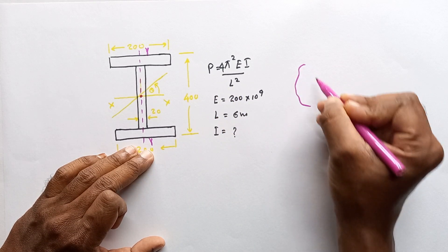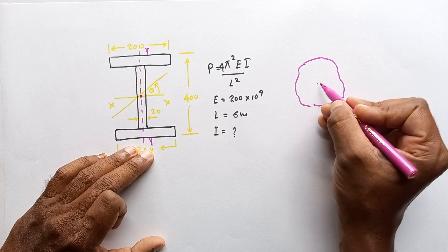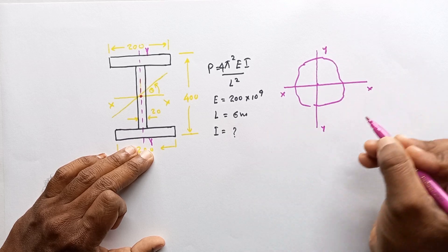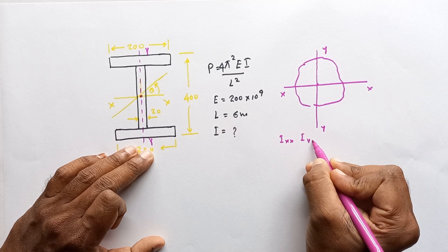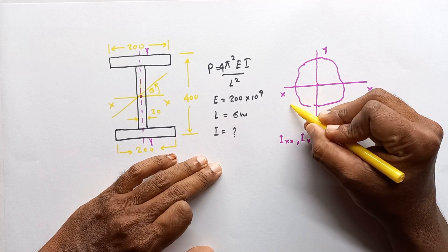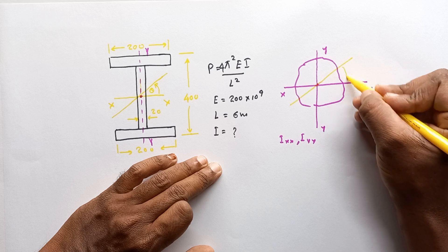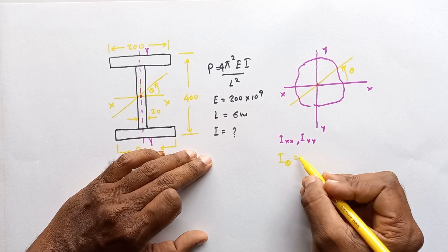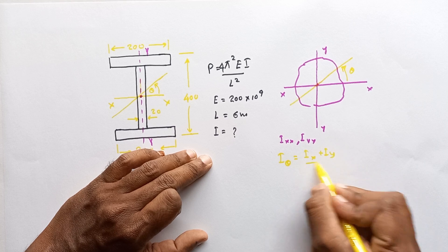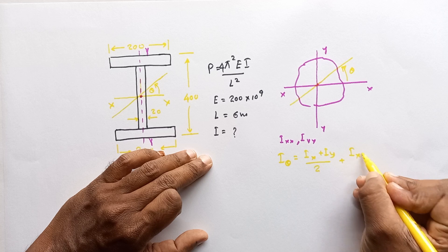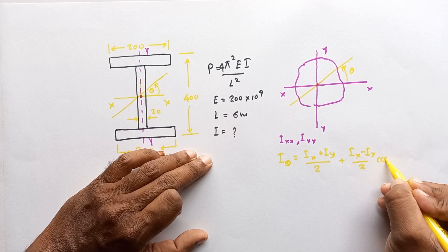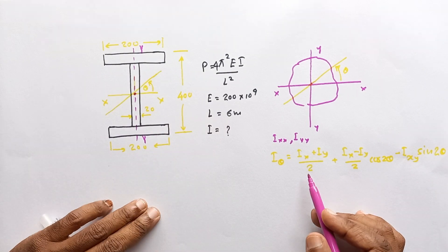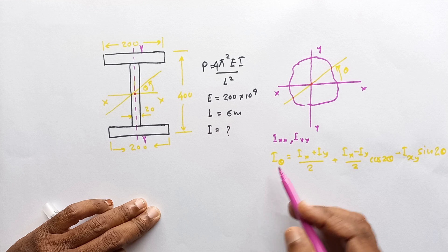For any given cross-section, take coordinate axes XX and YY. If we know I_xx and I_yy, then for any axis passing through the centroid at angle theta to the positive X direction, the I_θ value is given by: I_θ = (I_x + I_y)/2 + (I_x − I_y)/2 · cos2θ − I_xy · sin2θ. By varying theta we can calculate the I value for any inclination.